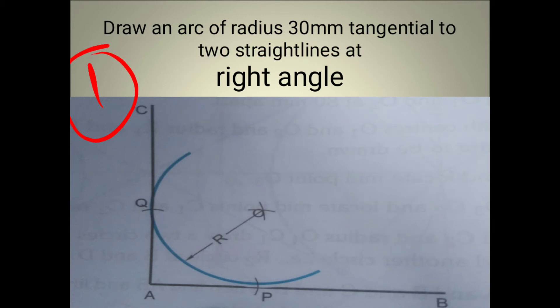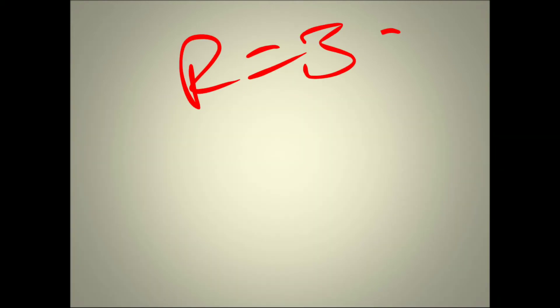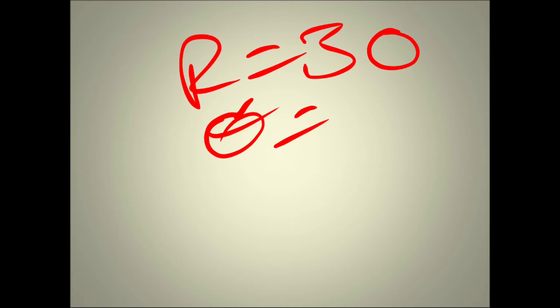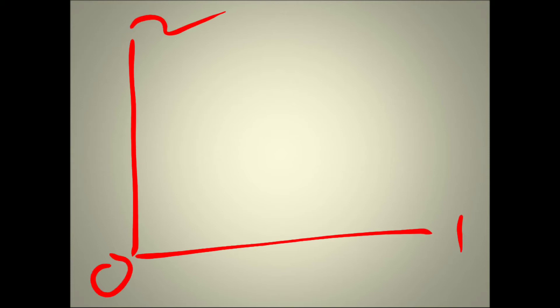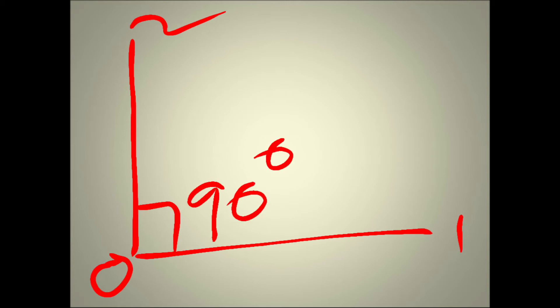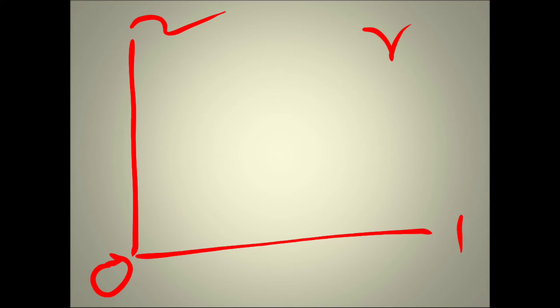Coming to Model Number One, the procedure: the problem has given radius 30 mm and angle theta is 90 degrees — that means the angle between the two straight lines. For this, the procedure is: draw two straight lines — straight line one and straight line two — meeting point is O. These two lines have a 90 degree angle as given in the problem, with arc radius 30 mm. Now, Step Number One: using the compass.